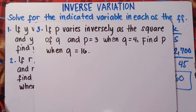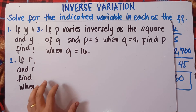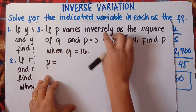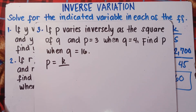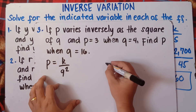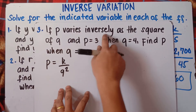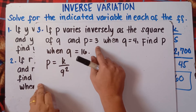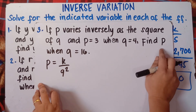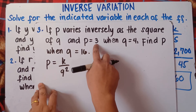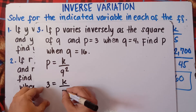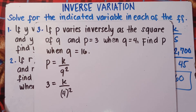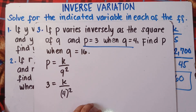Number 3: if P varies inversely as the square of Q, and P equals 3 when Q equals 4, find P when Q equals 16. Write the equation: P equals k over Q squared. Note: 'square of Q' means Q squared — Q multiplied by itself, not Q times 2. Substitute P equals 3 and Q equals 4 to find k.